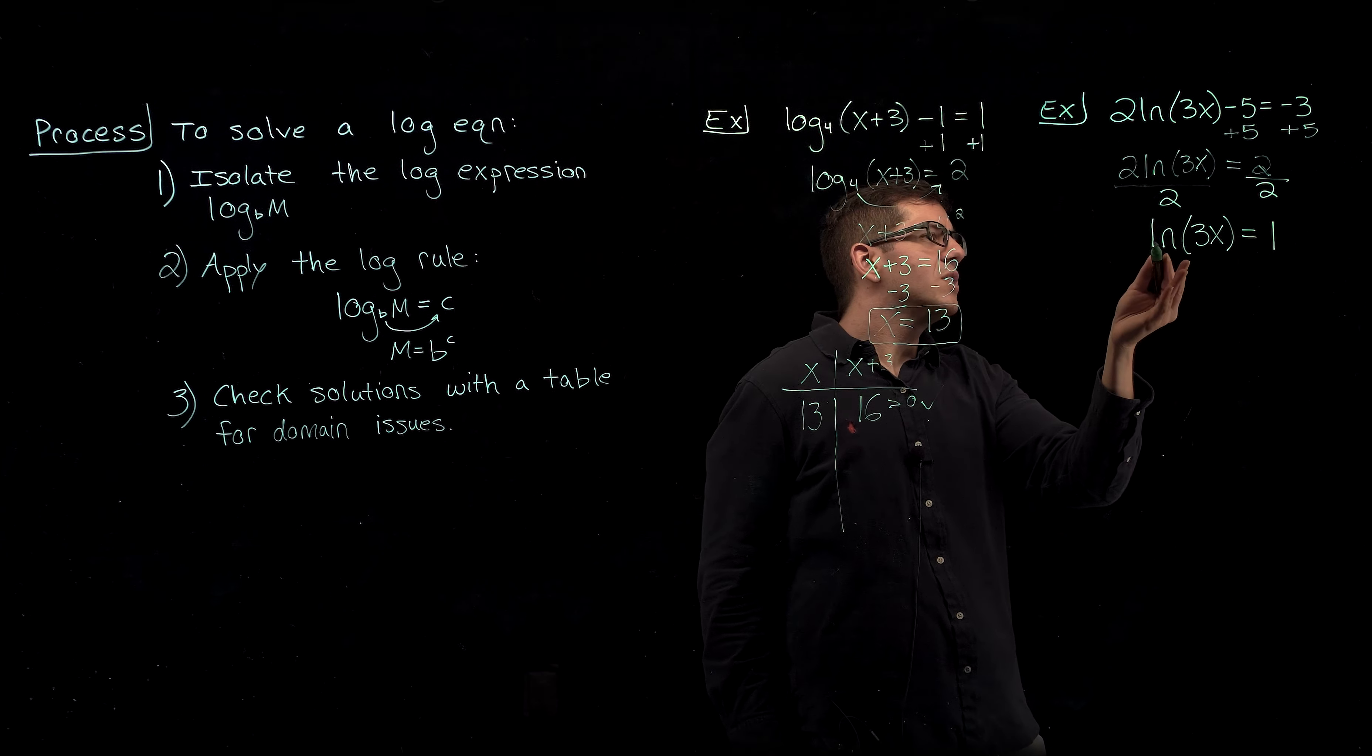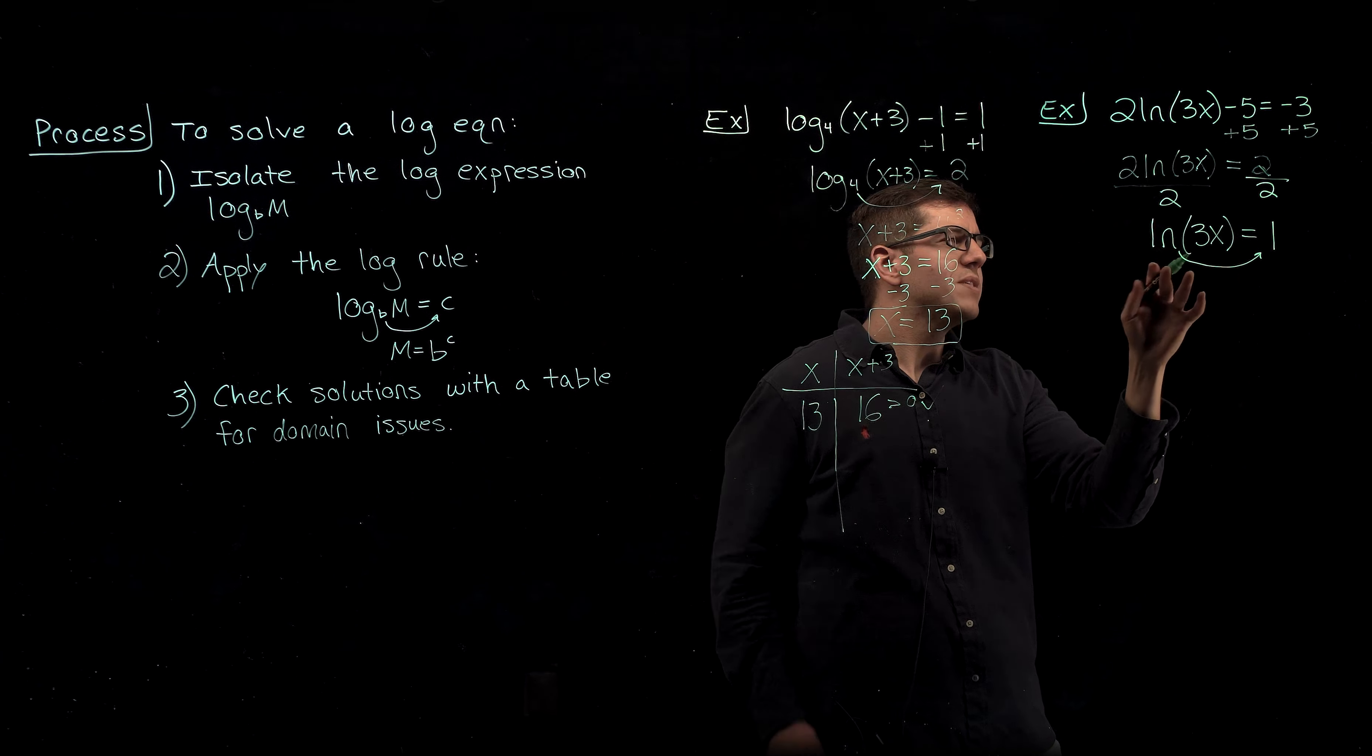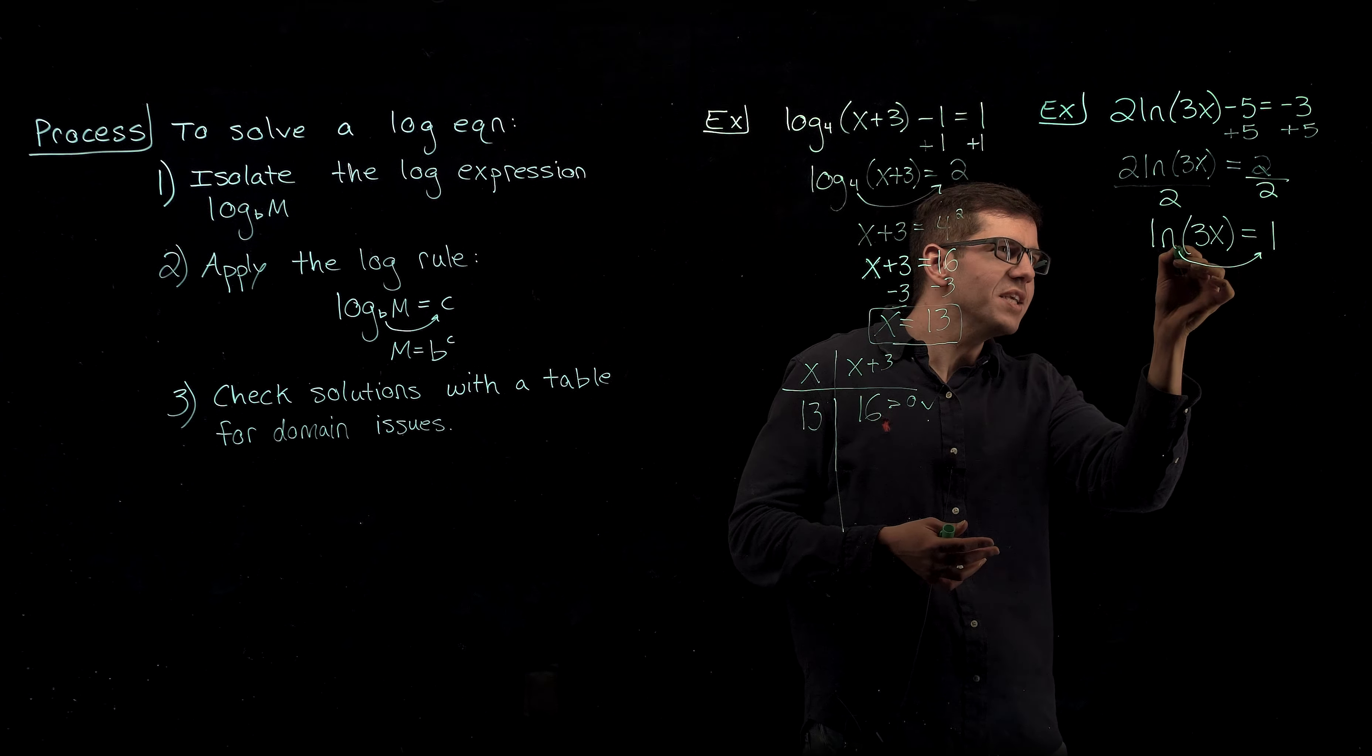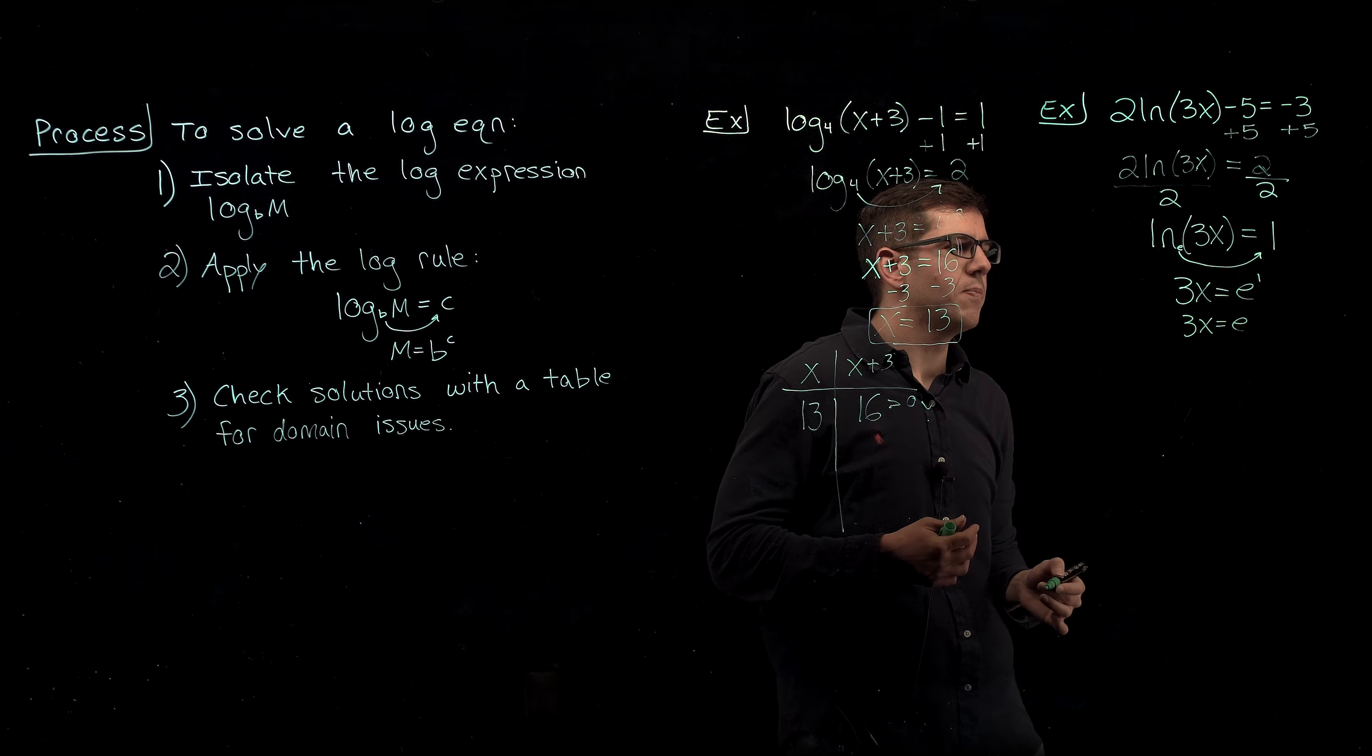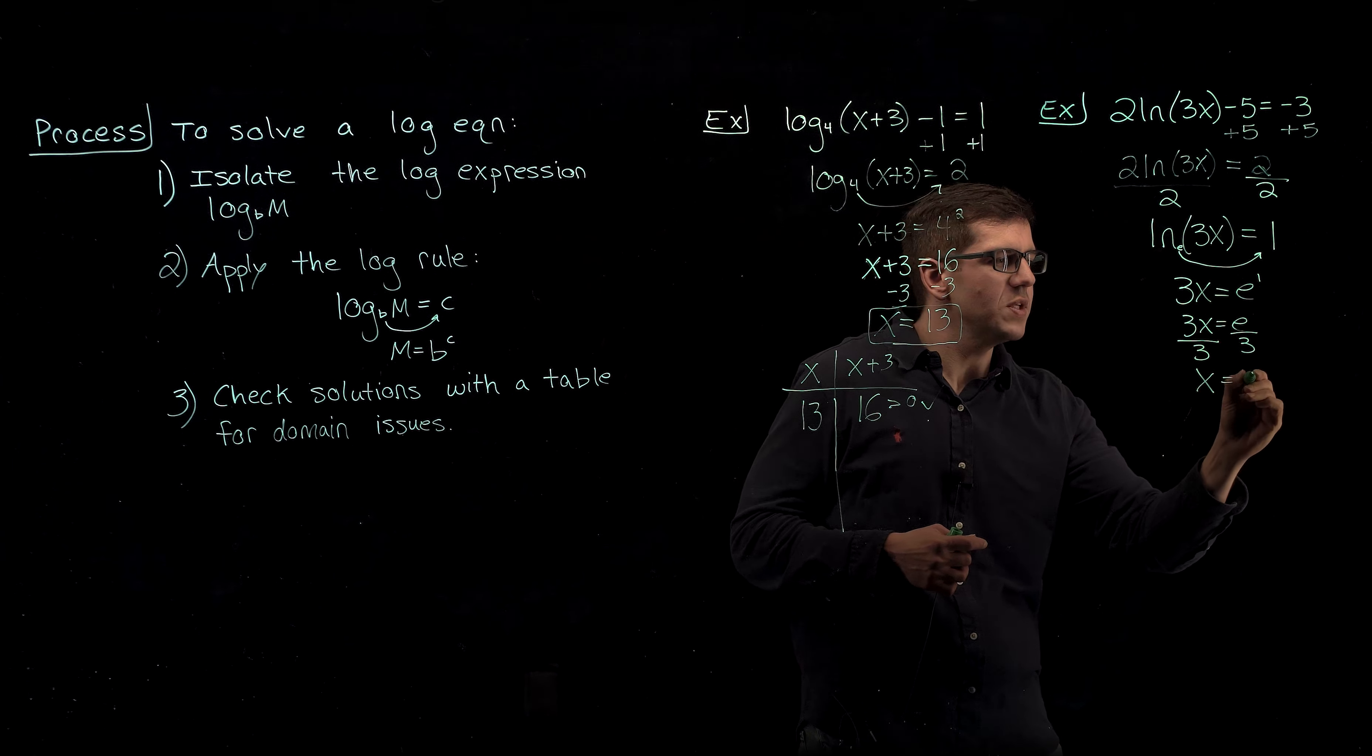From here, we now need to move the base to the other side to get rid of our log. In this case, when we move the base to the other side, it's a little bit unsure what the base is when you look at it. But remember, natural log has a base of e, the natural base. So there's technically an e here, we just don't write it because that wouldn't be simplified to show it. But we're really shifting this base of e over, giving us 3x equals e to the first power, or 3x just equals e. And now to get x alone, we can divide each side by 3 to give us x equals e over 3.